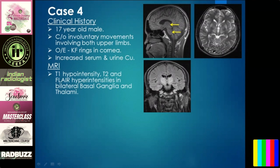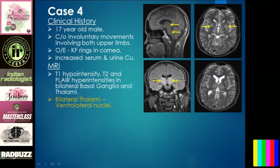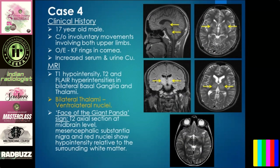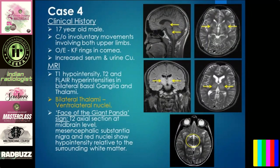On MR imaging, you see T1 hypointensity, T2 hyperintensity, and FLAIR hyperintensity in the bilateral basal ganglia and thalamus, most commonly involving the ventral thalamic nuclei. Then you see the famous sign — the face of giant panda or double panda sign, classically seen at the midbrain level where the mesencephalic substantia nigra and the red nucleus show hypointensity relative to surrounding white matter. This is a classical case of Wilson's disease. Key findings: T1 hypointensity, FLAIR and T2 hyperintensity in basal ganglia and thalamus.